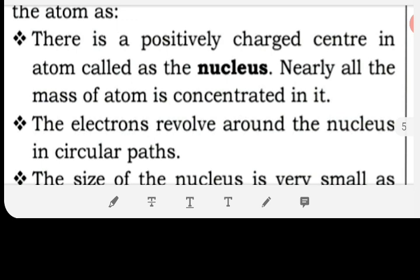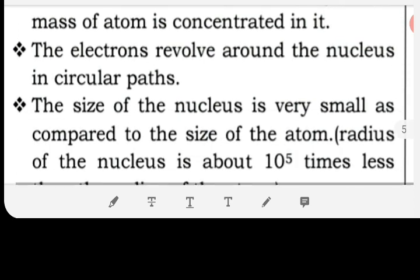The electrons revolve around the nucleus in the circular path. The size of the nucleus is very small as compared to the size of the atom. Radius of the nucleus is about 10 to the power 5 times less than the radius of the atom.